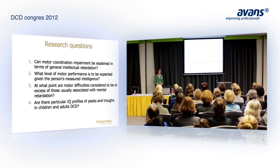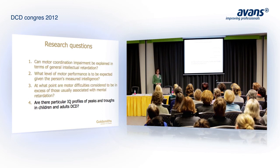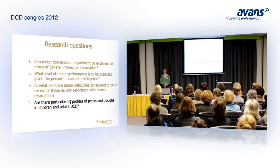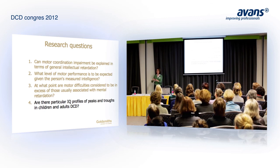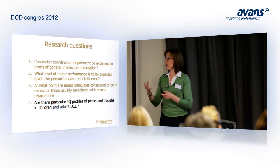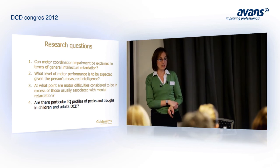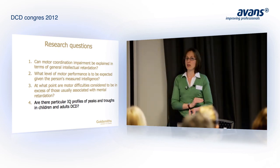For the first part of the talk I'm going to focus on three questions from data I've been working on with Bowien. First: can motor coordination impairment be explained in terms of general intellectual retardation — so if you have a low IQ, does that fully explain poor motor performance? Second: what level of motor performance is to be expected given a person's measured intelligence — if your IQ is 100 or 50, what do we expect of your motor abilities? Third: at what point is motor difficulty considered to be in excess of those usually associated with mental retardation or learning disability?